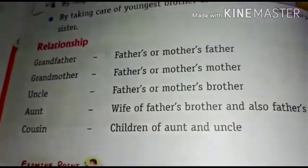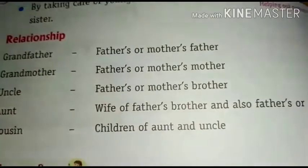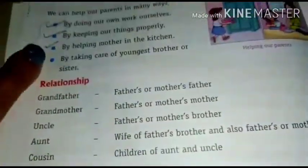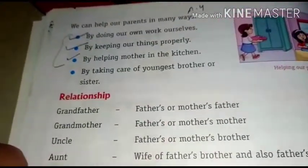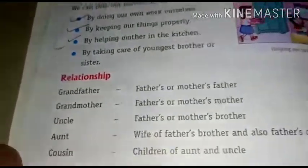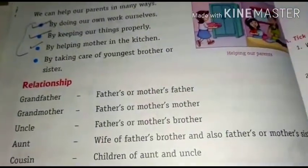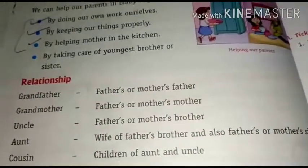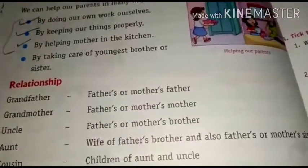Now let's look at relationships. Grandfather means father's father or mother's father — your dadaji or nanaji. Grandmother means father's mother or mother's mother — your dadiji or naniji. Uncle means father's brother or mother's brother — your chacha or mama.